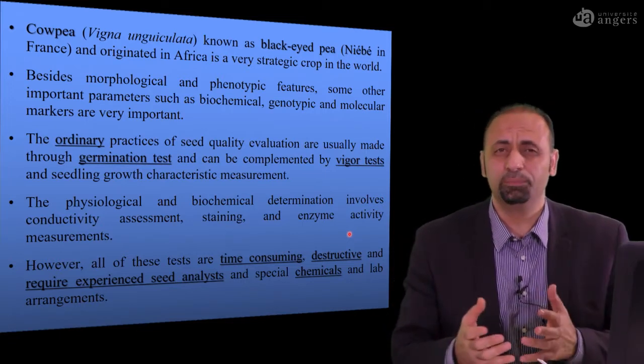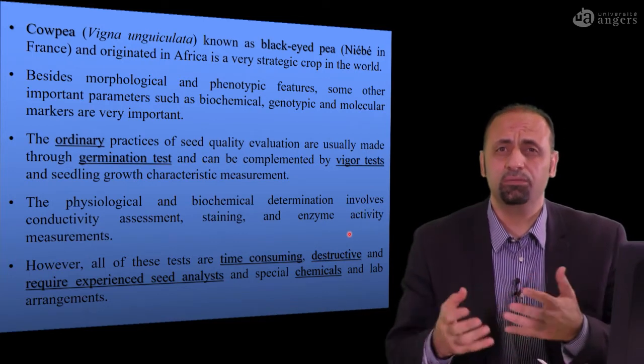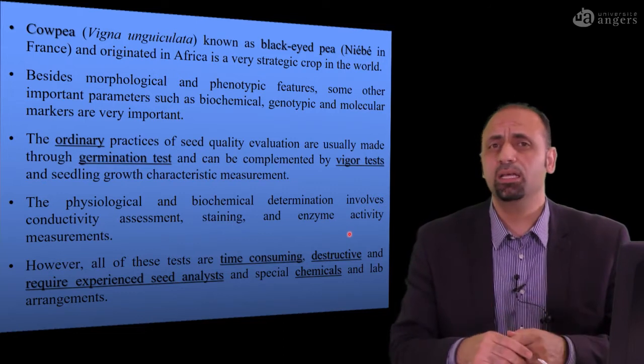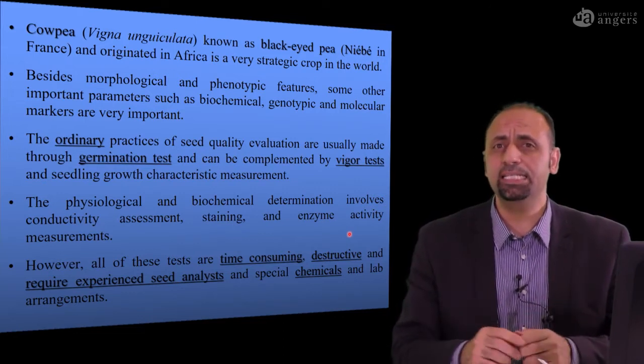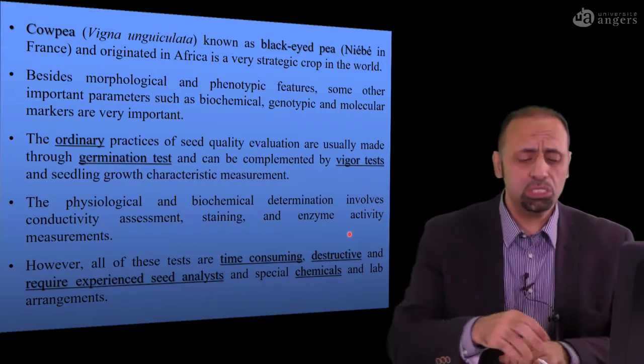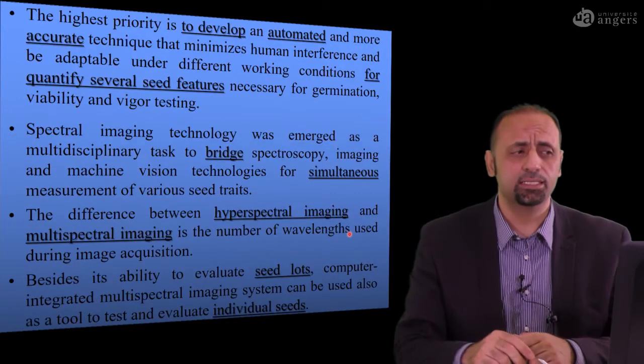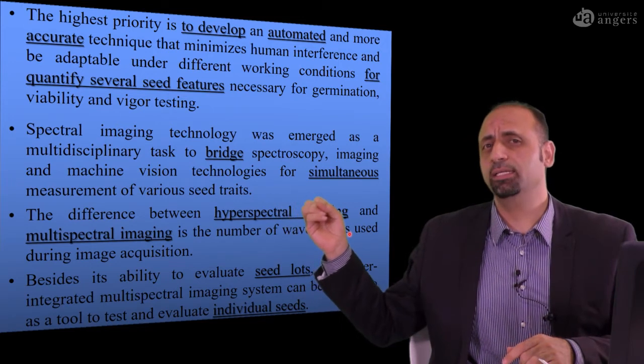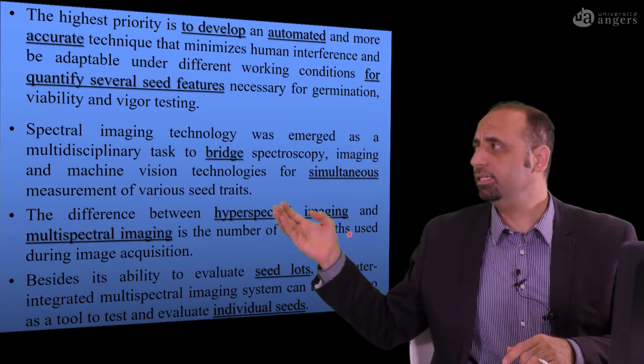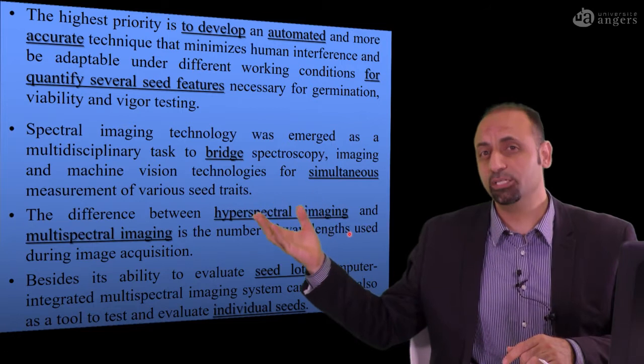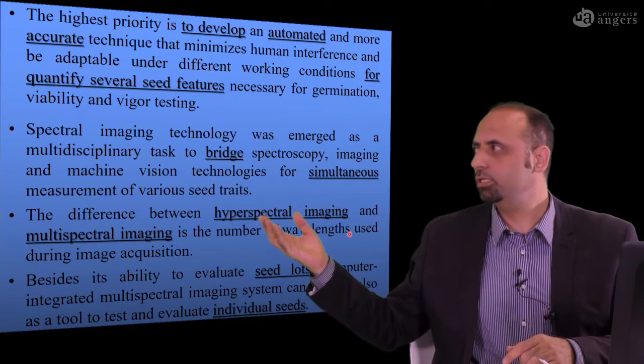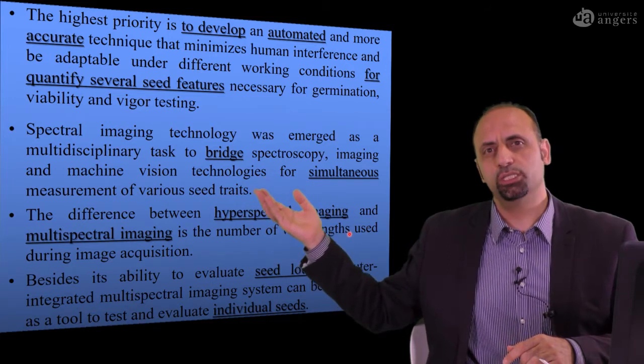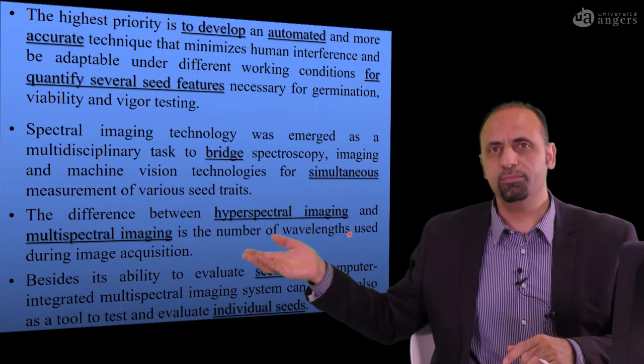The solution for that is because it's very time-consuming, it is a destructive technique and requires experienced seed analysts. So the solution is to find an alternative. To develop this kind of accurate and fast technique, you need to use spectral imaging. Why spectral imaging? Because it can bridge the two technologies: spectroscopy and imaging.